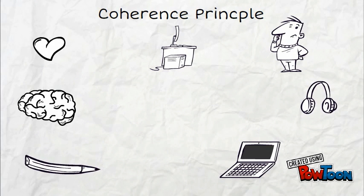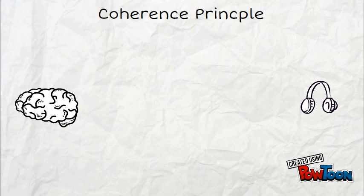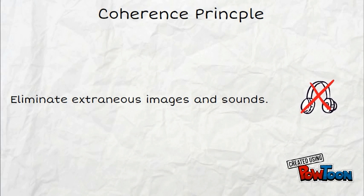First is coherence. Delete extraneous words and graphics and sounds. When sounds or images that are interesting yet not essential are introduced, they increase cognitive load. Some examples of this might be transition sounds or background music during the presentation of material to be learned.